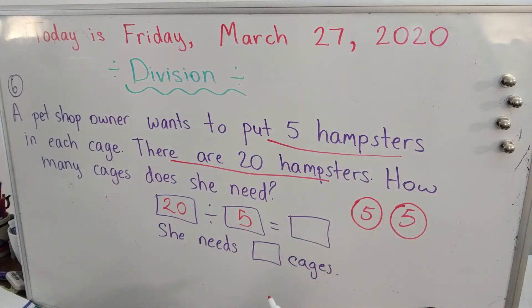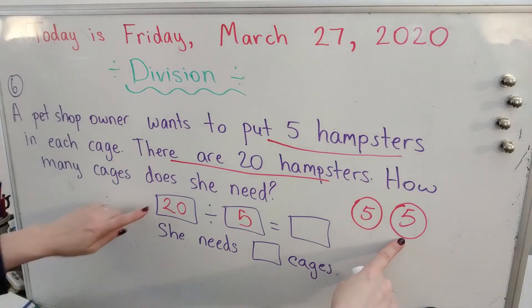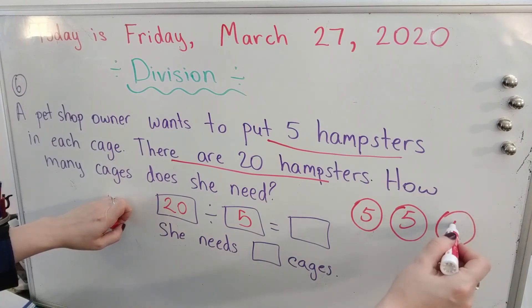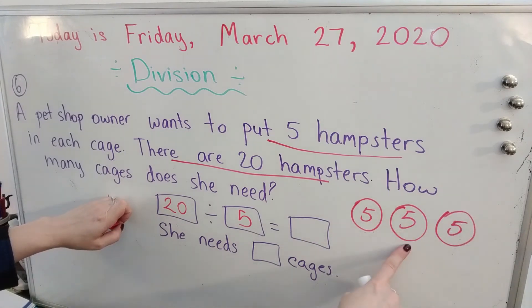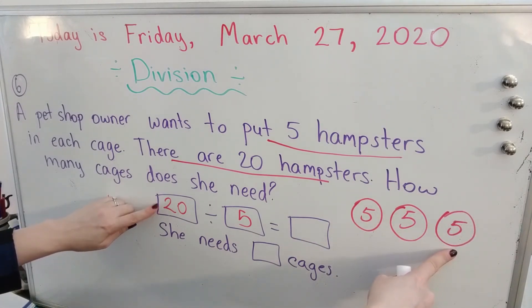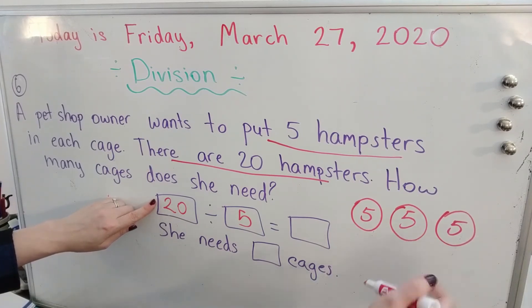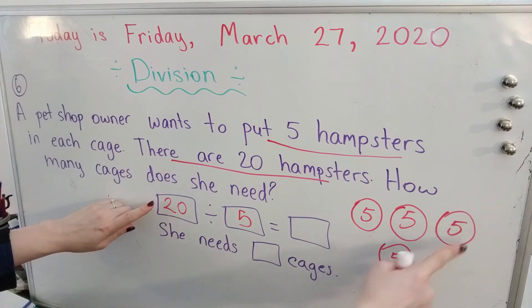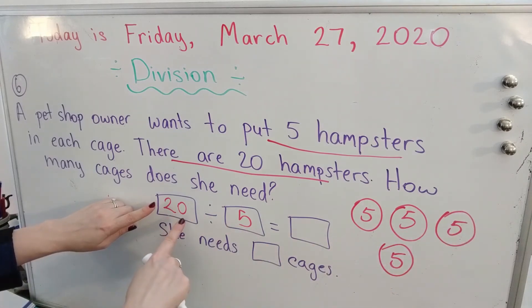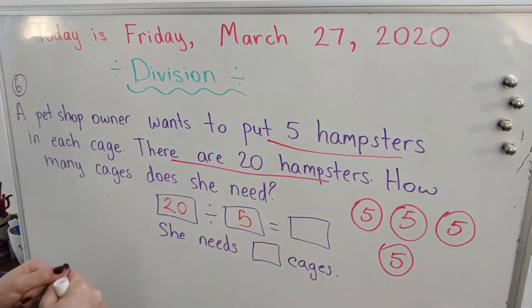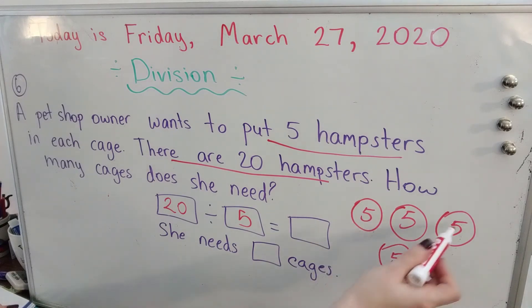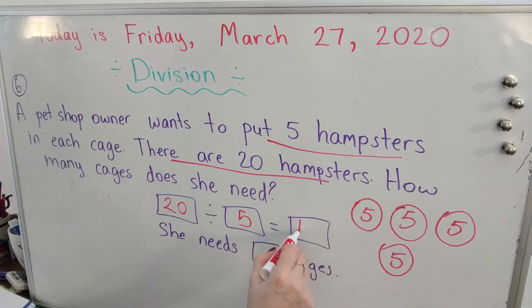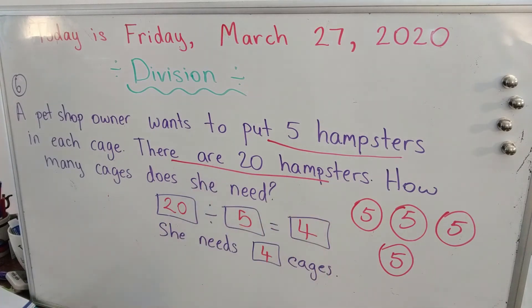Here's another cage — she puts another five hamsters. Five, 10 — we used 10 hamsters, but there are still more to share. Here's another cage with five inside — five, 10, 15 — we still have more to share, we're not at 20 yet. Here's another cage with five more — five, 10, 15, 20 — we finally reached 20. We don't have any more hamsters to share. So how many cages would we need? We would need four cages. She needs four cages to put 20 hamsters.